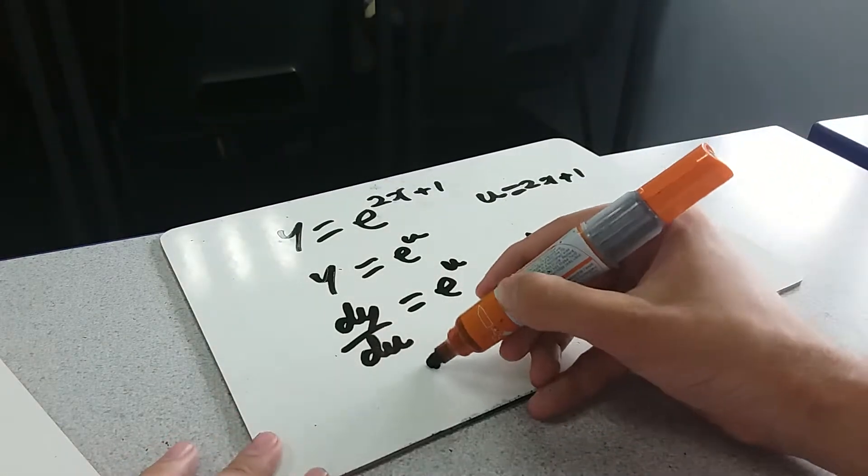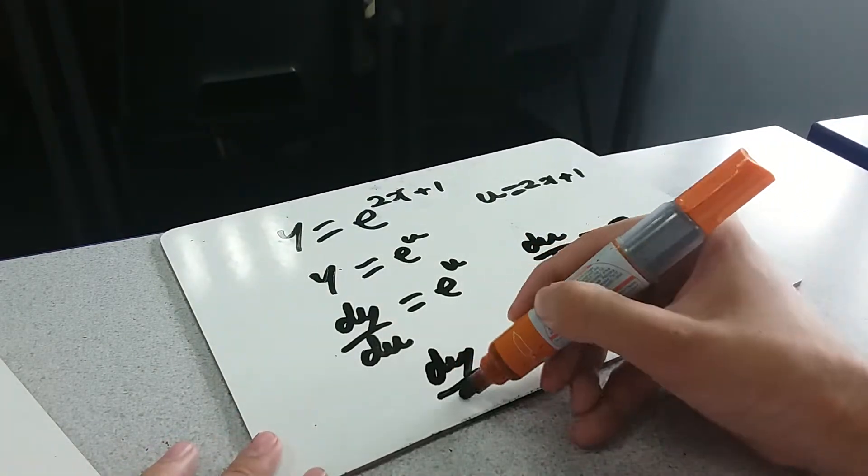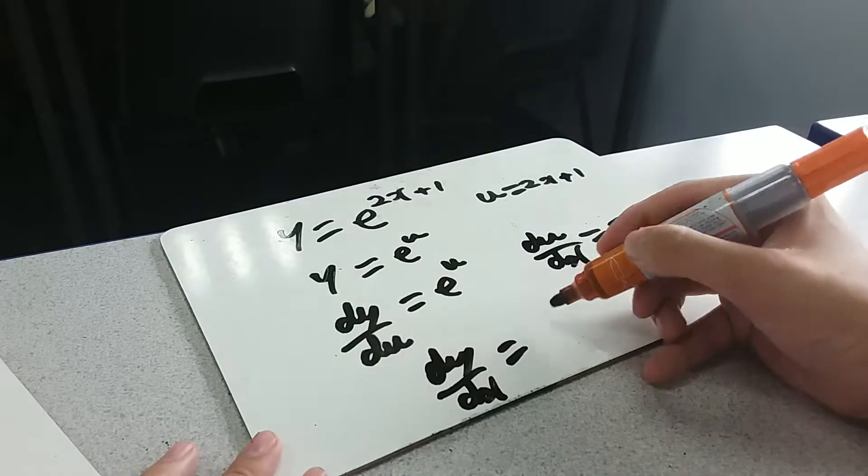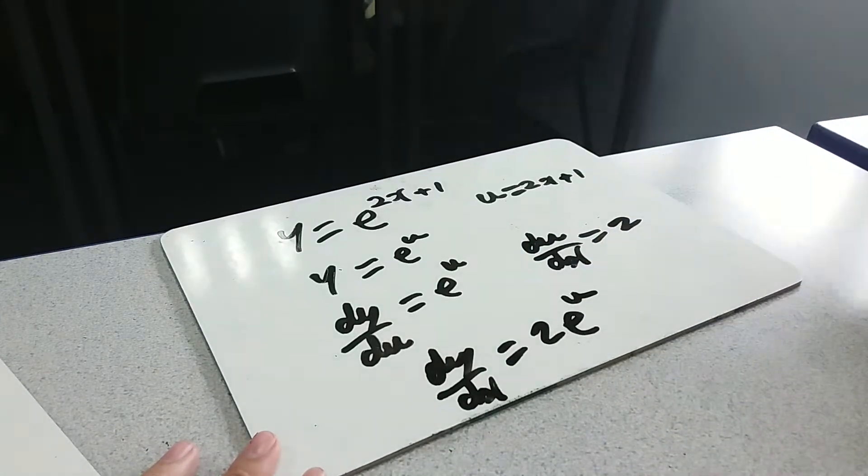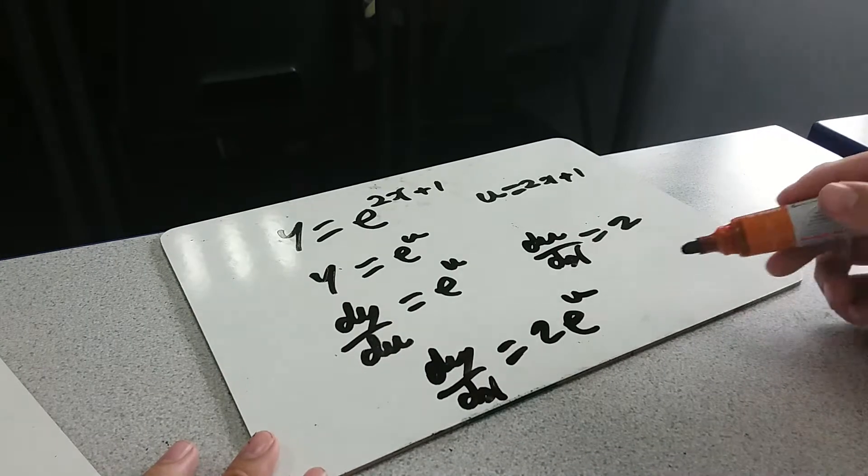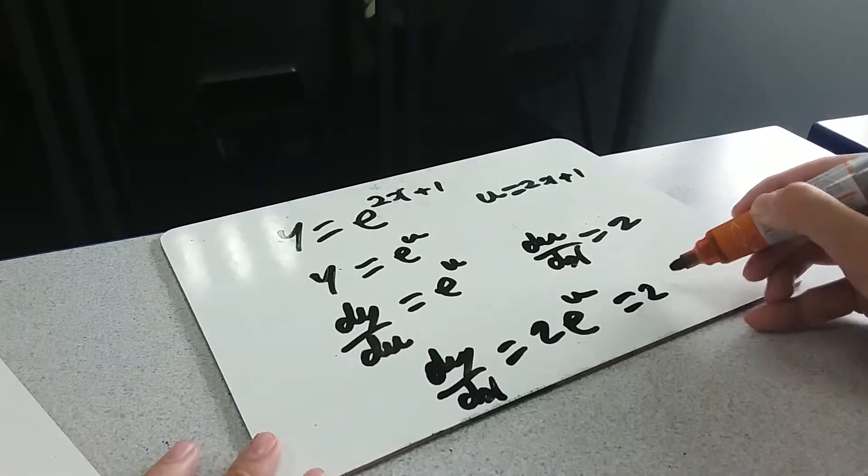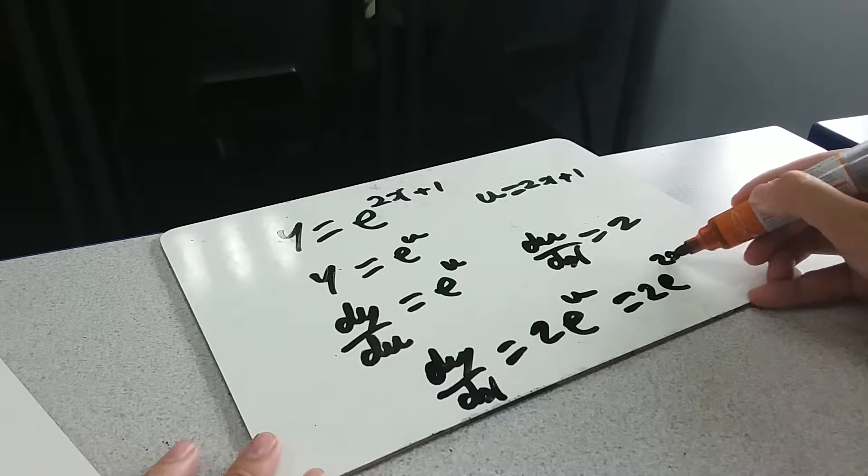So putting it together by the chain rule, dy dx is these two things times together. So e to the u. That's all in terms of u. So I'm going to pop back, where u equals this. So we get 2e to the 2x plus 1.